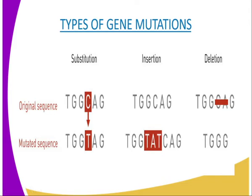Our second type of mutation is deletion. This is the removal of a portion of the gene. As you can see, our original sequence is TGGCAG, but the mutated sequence becomes TG — meaning CA has been deleted completely. Remember, deletion has a very harmful effect, because once a gene is deleted it might not reoccur again, and this might affect subsequent generations.